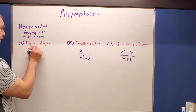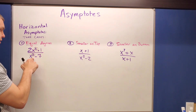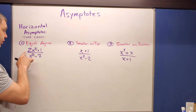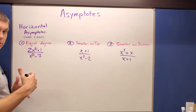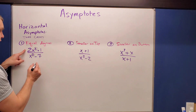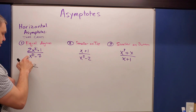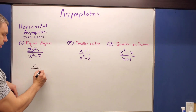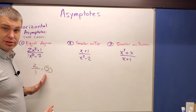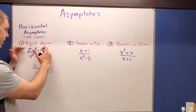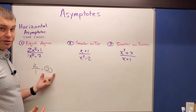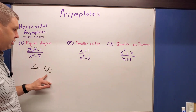If the degrees are equal — both two — we look at the leading coefficients of the top and bottom and divide them. The leading coefficient on top is two; on the bottom, if there's no written number, it's one. So two divided by one is just two. The result can be a fraction depending on your leading coefficients, but here it's simply two.